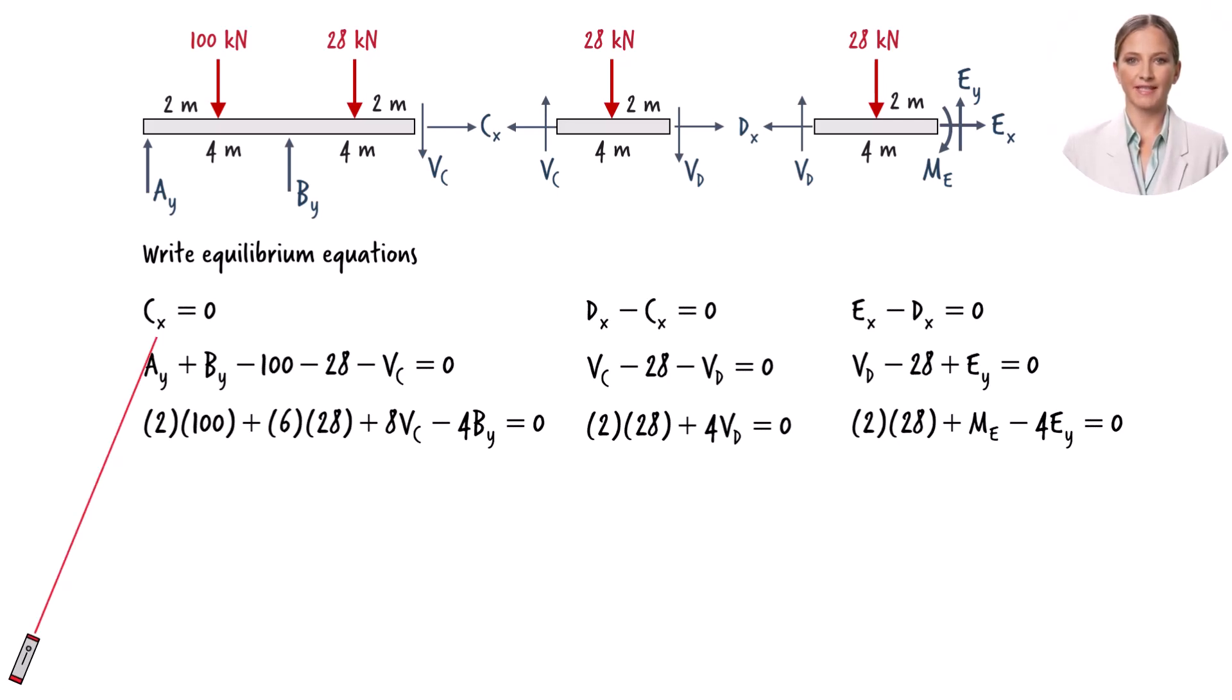This equation states that Cx equals zero. If we substitute zero for Cx in this equation, we get dx equals zero. And this equation tells us that Ex is also zero.